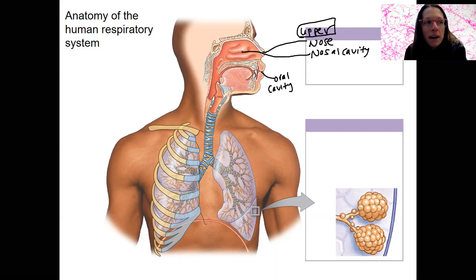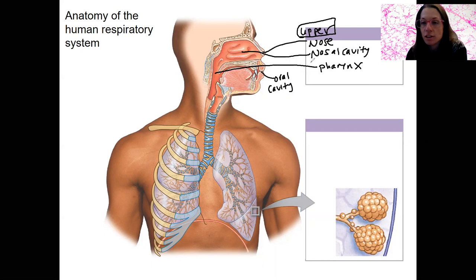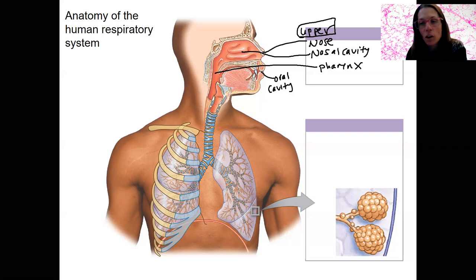Air is going to pass down into the pharynx. These are all conducting passageways we're talking about. We're conducting air from the external environment into the body — all part of that pulmonary ventilation.